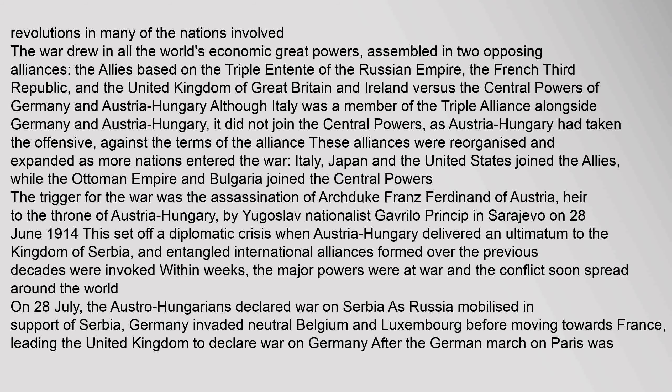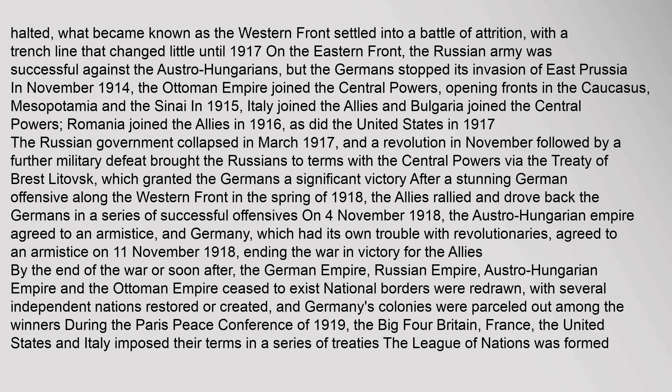On 28 July, the Austro-Hungarians declared war on Serbia. As Russia mobilized in support of Serbia, Germany invaded neutral Belgium and Luxembourg before moving towards France, leading the United Kingdom to declare war on Germany. After the German march on Paris was halted, what became known as the Western Front settled into a battle of attrition, with a trench line that changed little until 1917. On the Eastern Front, the Russian army was successful against the Austro-Hungarians, but the Germans stopped its invasion of East Prussia in November 1914. In 1915, the Ottoman Empire joined the Central Powers, opening fronts in the Caucasus, Mesopotamia, and the Sinai.